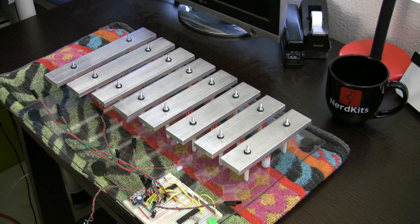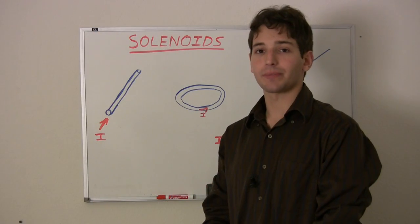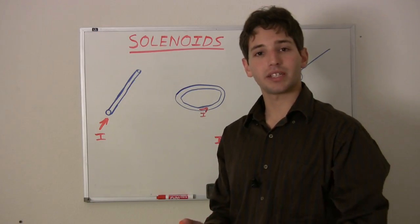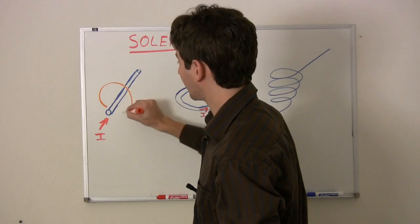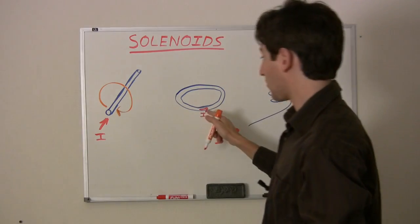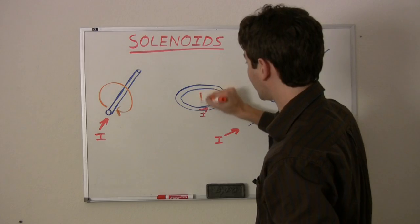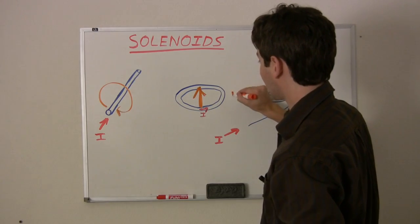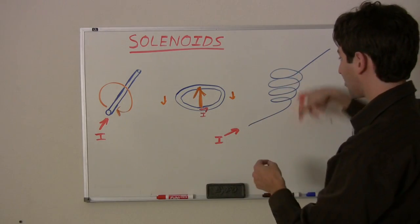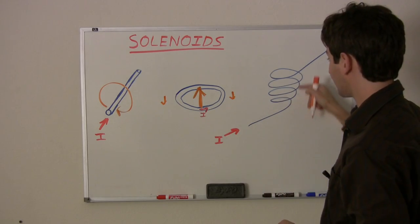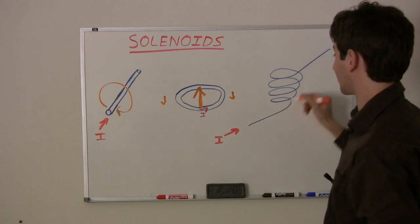So the next step was to build electromechanical actuators to let the microcontroller strike each bar at the right time. Solenoids are one of the most basic electromechanical actuators. To understand them, we have to go back to physics and remember that a current in a wire will create a magnetic field around it. Then we can make a loop of wire, and now the magnetic field from all these little segments of wire add up. Finally we can wrap it around as a solenoid coil. Now we have a bunch of loops, and the magnetic field contributions from all of these loops add up. This lets us get one field that's really strong in the center.